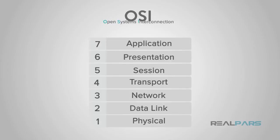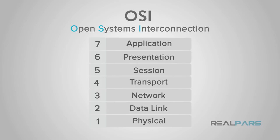OSI stands for Open Systems Interconnection and is a conceptual framework for how applications communicate over a network. There are seven layers within the model, and the layer's depiction is used to help users identify what is happening within a networking system.